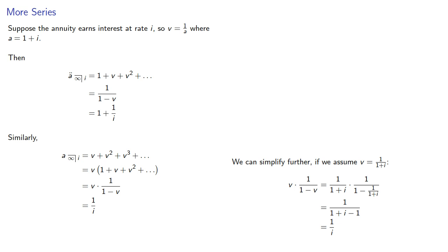Note that since a double dot angle infinity at interest rate i includes a payment of one at t equal to zero, the present value of this annuity is one more than the present value of a angle infinity at interest rate i.